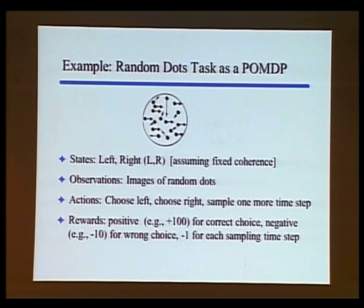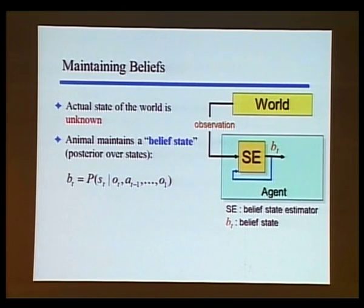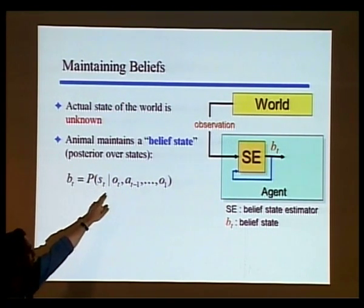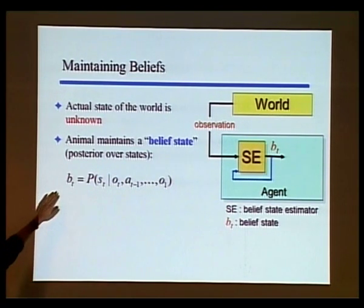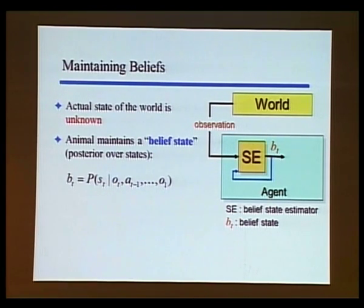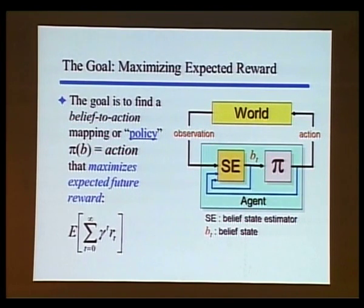There are many possible variations of this framework. The key component for solving this problem is that the actual state of the world is unknown, so the only way to make decisions is by maintaining a probability distribution — a belief state B(t) — over the hidden states, given all previous observations and actions. The goal is to maximize the expected sum of rewards over all time steps, typically discounted by a factor gamma between 0 and 1 to keep the sum finite. For episodic tasks gamma can equal 1. The goal is to find a policy phi that maps your belief state to the appropriate action to maximize expected reward.